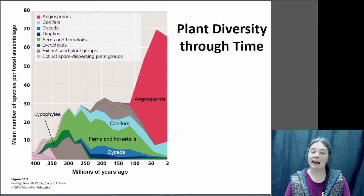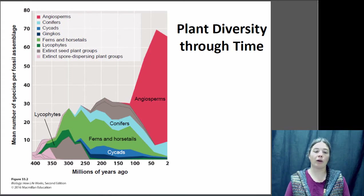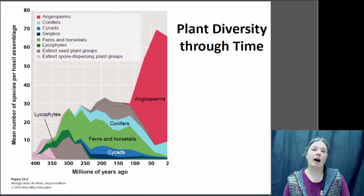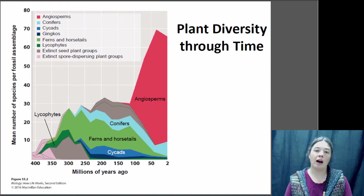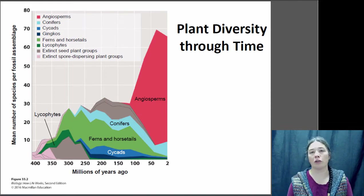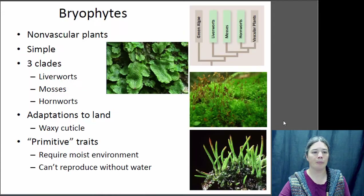Conifers and cycads were the first dominant seed plants, and then when the angiosperms emerged approximately 200 million years ago, they quickly radiated and most of the plants that we have on the planet now are actually angiosperms, although some of these other groups are still present. So we're going to be looking at some of these other groups first.